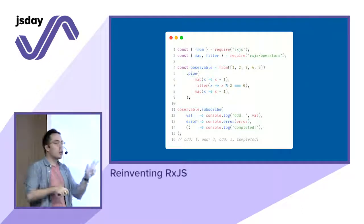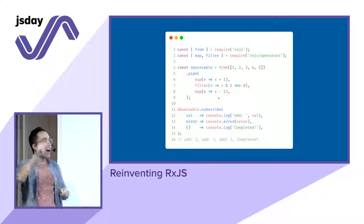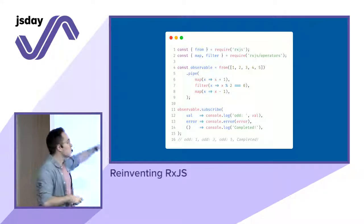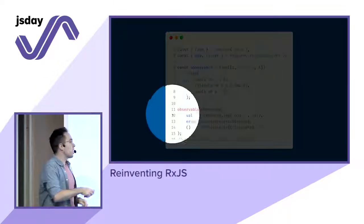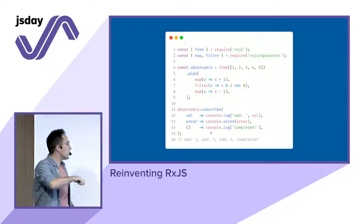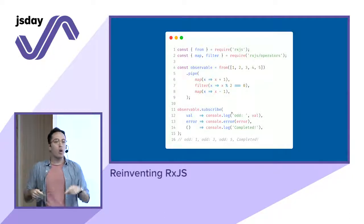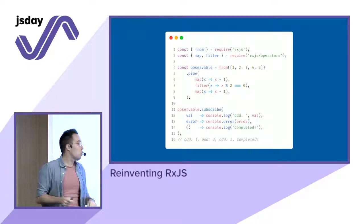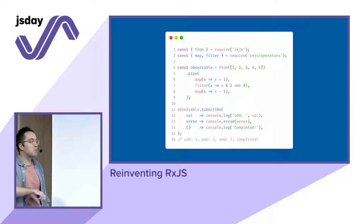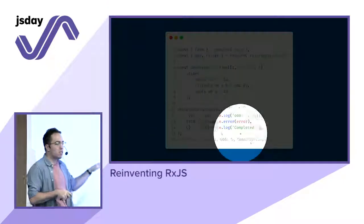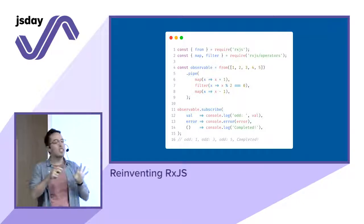`subscribe` accepts three parameters — three functions. The first function gets called every single time a single value goes down the pipe. The second parameter gets called if something bad happens, if we have an error. The third one gets called when all the numbers are done — when the job is complete. So in the console log you are going to see: odd one, odd three, odd five, and 'completed'.